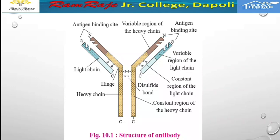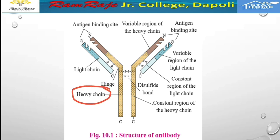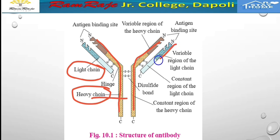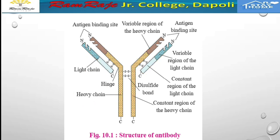The structure of the antibody is a Y-shaped molecule. Each immunoglobulin molecule is made up of 4 polypeptide chains: 2 heavy chains and 2 light chains. The polypeptide chains are held together by disulfide bonds.